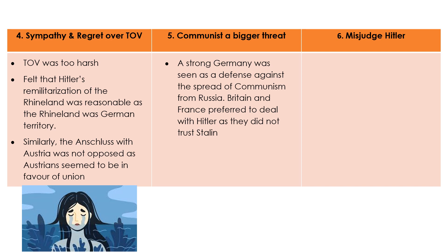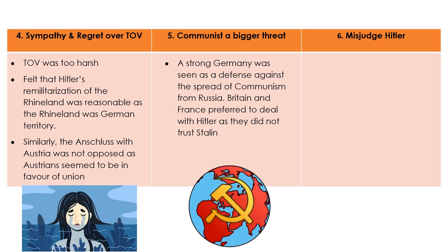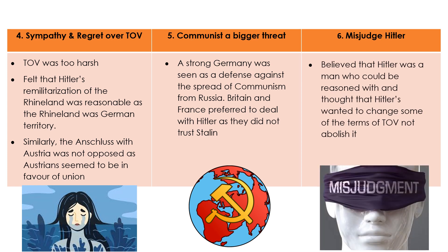Another reason why appeasement was adopted was that communism was something they were more scared of. The idea of communism especially scared people who had resources and money — businesses, for example — because in a communist country, businesses, resources, and land would all be given up equally. And the last reason is definitely misjudgment. Chamberlain especially, and the politicians then, felt that Hitler was someone who could be trusted — more than communist leaders or any communist party. So that's why they felt, let's give Hitler and Germany an opportunity and a chance.